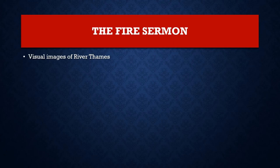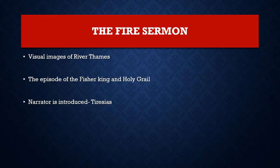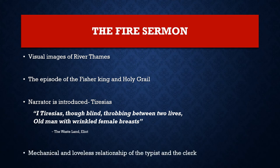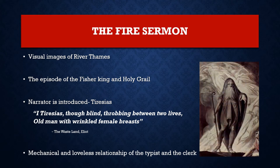The third part is The Fire Sermon. It has vivid images of River Thames and the episode of the Fisher King and the Holy Grail. It is at the pinnacle of Part 3 that the narrator Tiresias is introduced: 'I Tiresias, though blind, throbbing between two lives, old man with wrinkled female breasts.' Furthermore, the mechanical and loveless relationship of the typist and the clerk is depicted here. This part concludes with the last passage, which is the song of the three daughters of Thames.